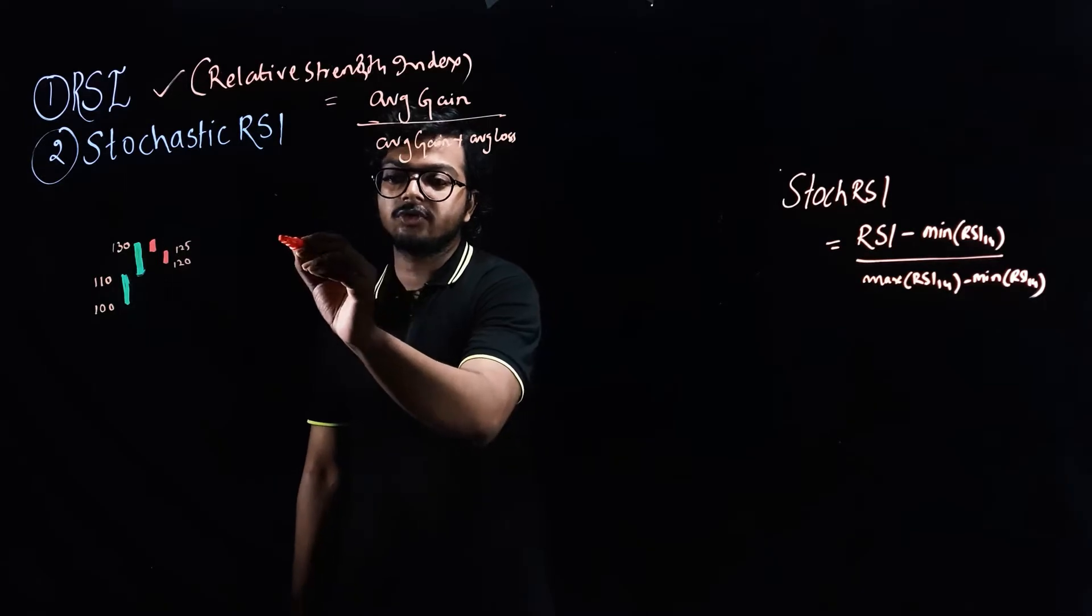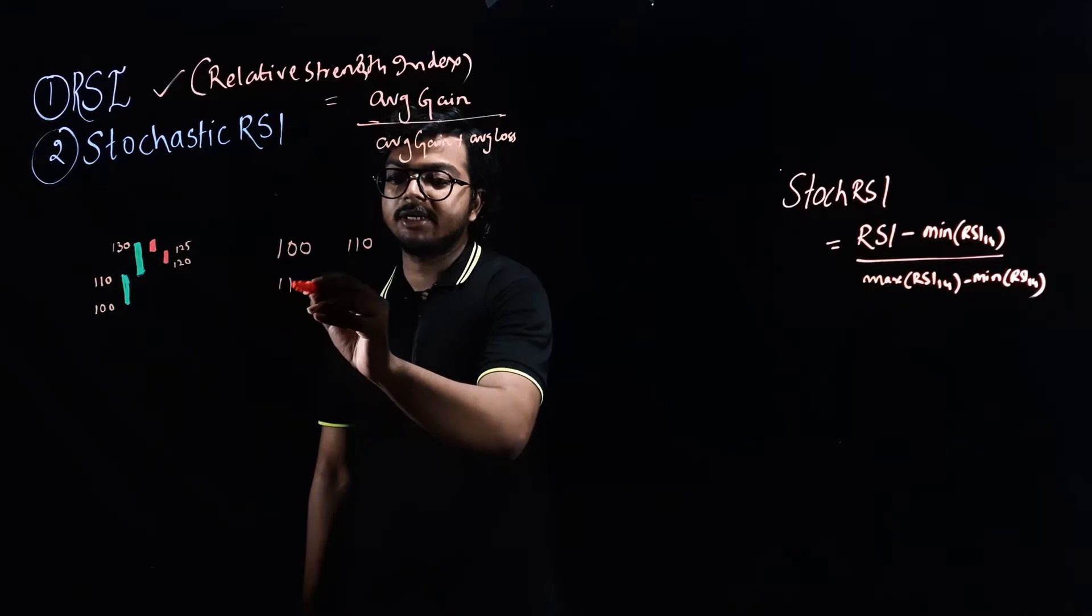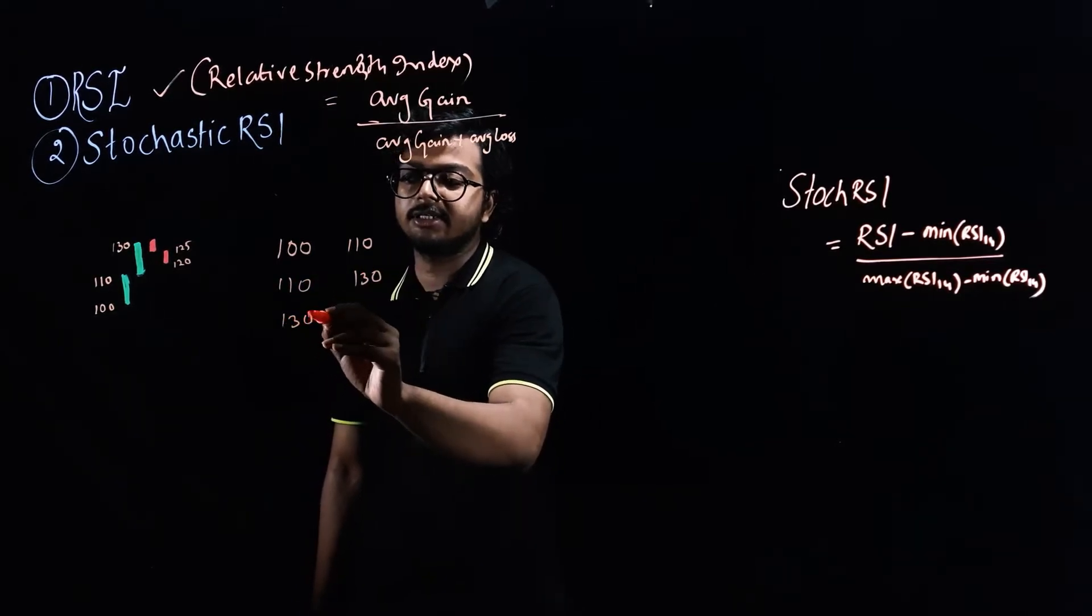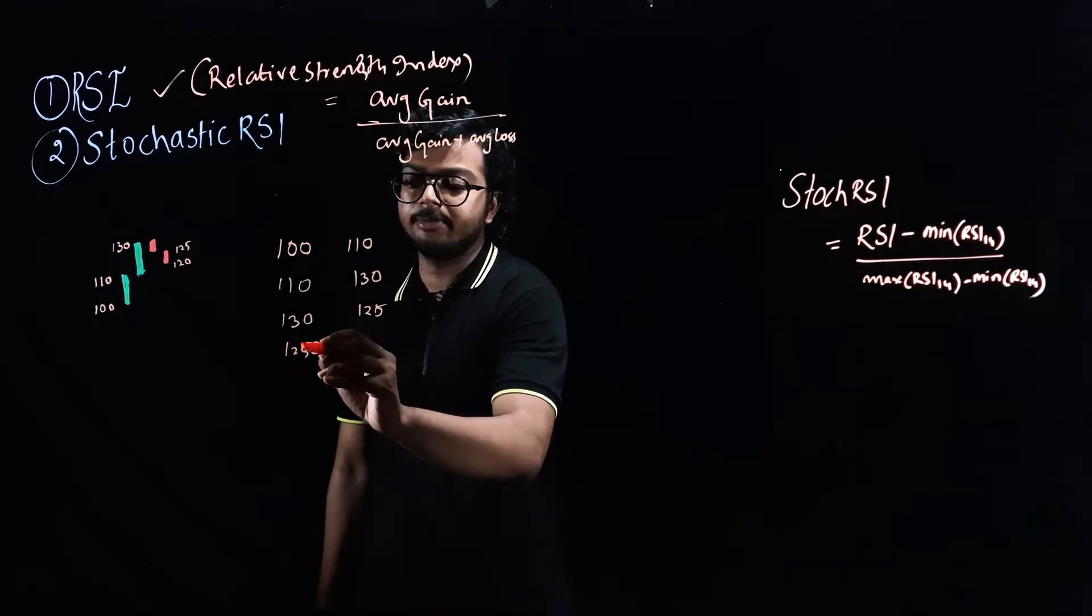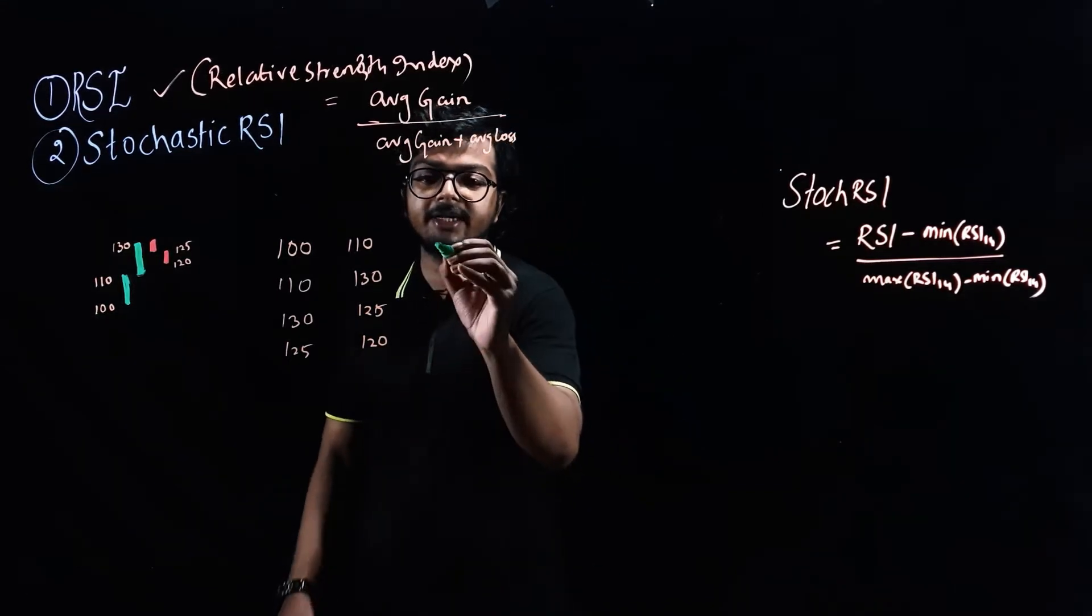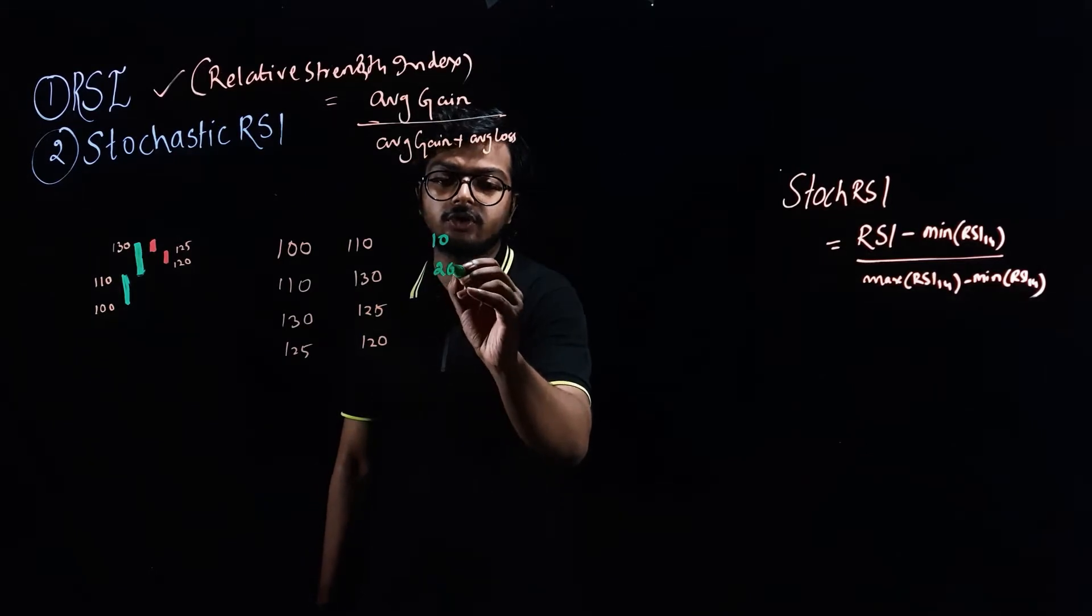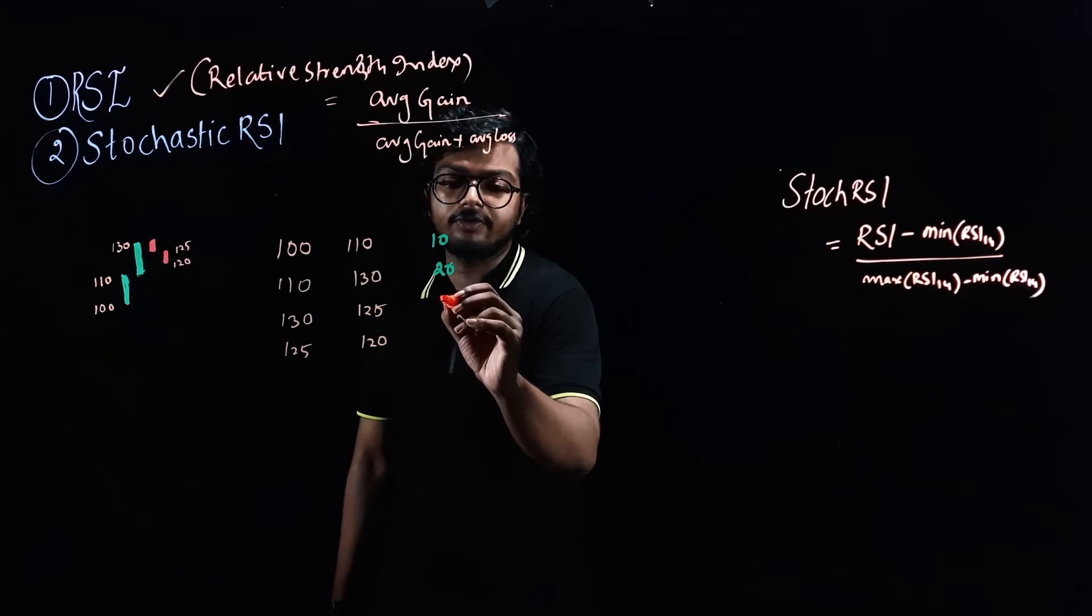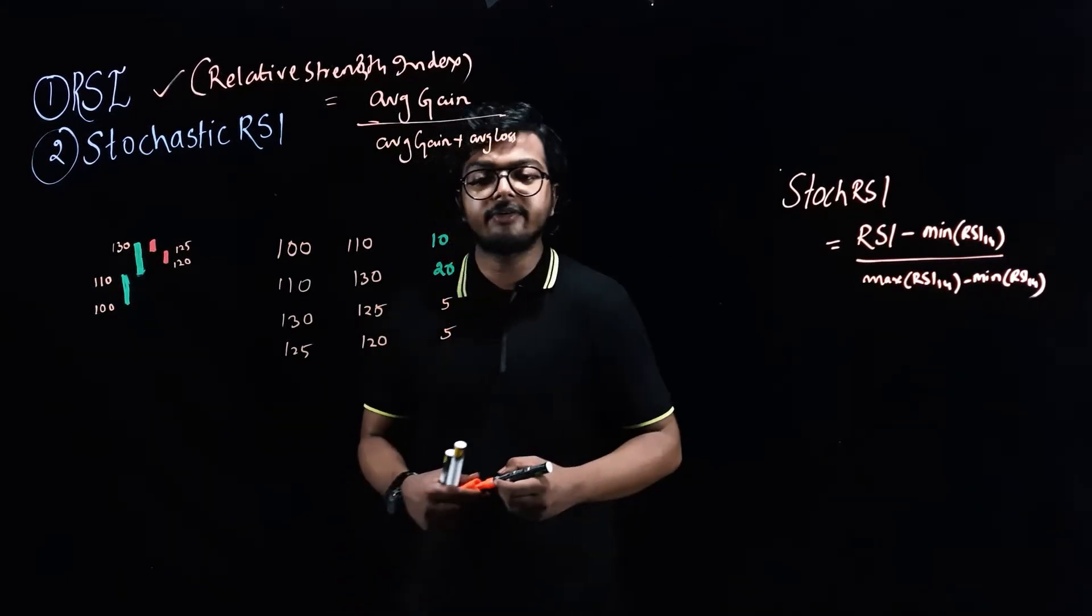If you see, the first price was 100, then it moved to 110, then from 110 it moved to 130, and then from 130 it fell down to 125, and then from 125 it again fell down to 120. So if you see here, it made a gain of 10, here it made a gain of 20, then here it made a loss of 5, and here also again a loss of 5 points.